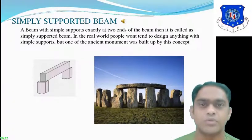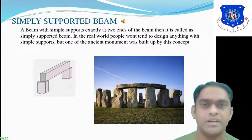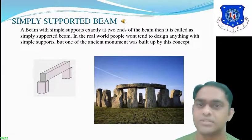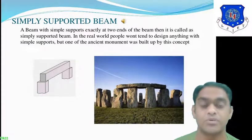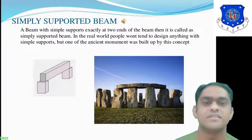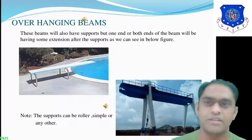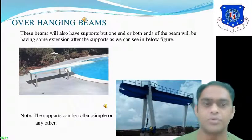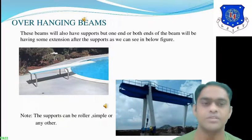Simply supported beam: a beam with simple supports exactly at two ends is called a simply supported beam. In the real world, people don't tend to design structures with simple supports, but one of the ancient monuments was built using this support. As you can see in the figure, this is the horizontal beam which is supported by several simple supports.